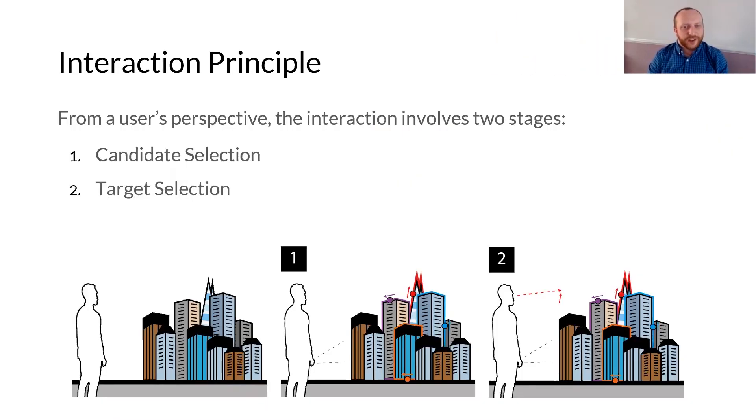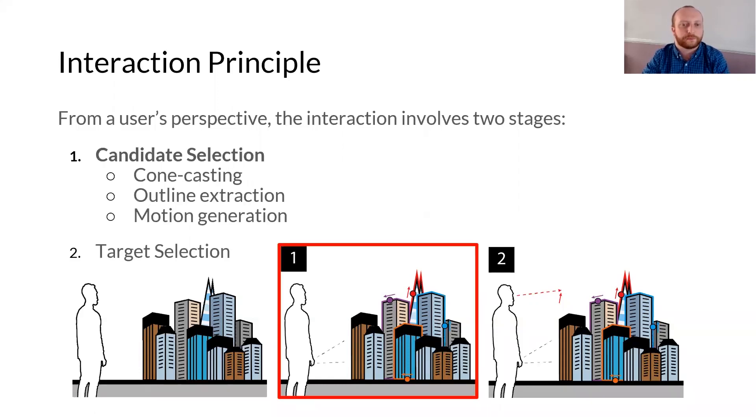Thanks Ludwig. From a user's perspective, selecting an object using outline pursuits involves two stages. The first stage is candidate selection, which is used to reveal potential targets using coarse-grained pointing. The second stage is selecting one target from the candidates using smooth pursuit-based selection. We will first look at the candidate selection stage, which consists of cone casting, outline extraction and motion generation.